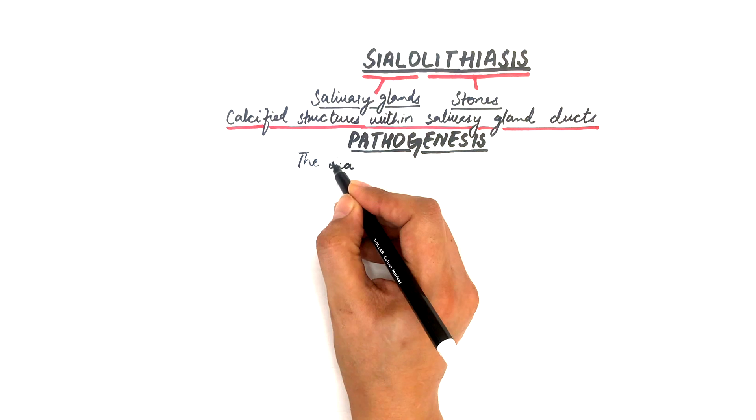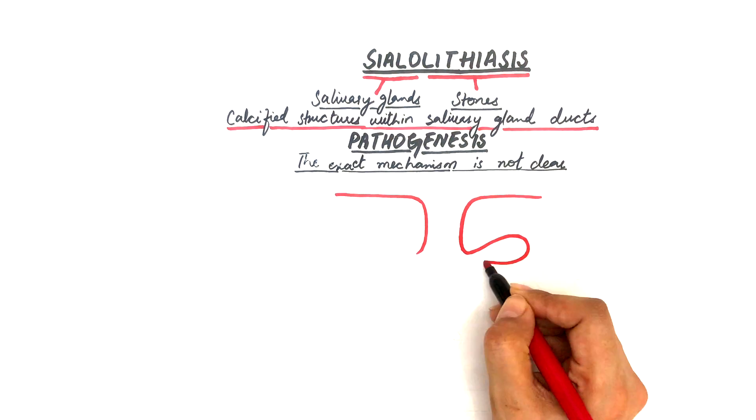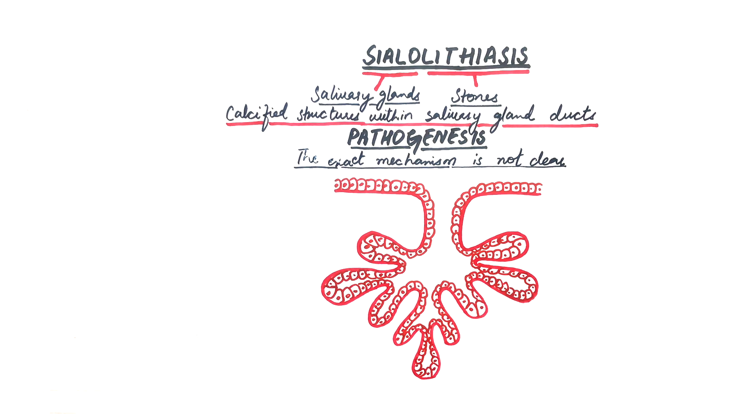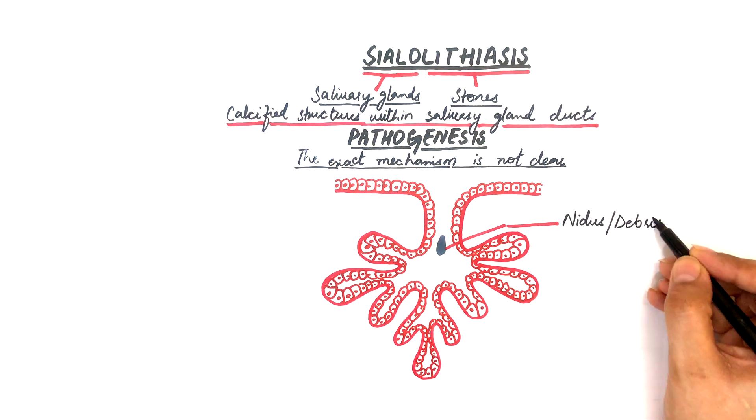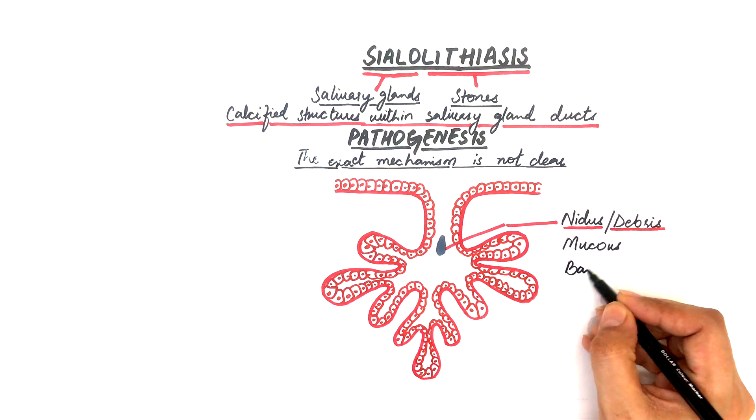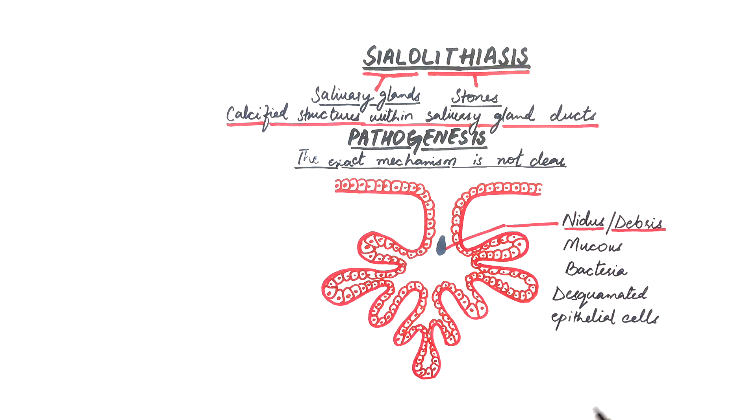The exact mechanism of a sialolith is not clear, but research done to date suggests that they may arise from a nidus or debris retained within the ductal lumen, making its lumen partially blocked. This nidus or debris is composed mainly of mucous, bacteria, ductal epithelial cells, and foreign bodies.